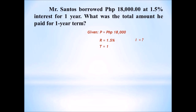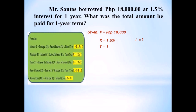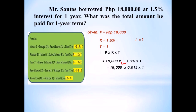We will first solve the interest in order to find the amount due. From the formula, interest is equal to principal times rate times time. Substitute: principal amount is 18,000 times 1.5 percent times 1. Change first the percent into decimal by moving two decimal places to the left. So that is 18,000 times 0.015 times 1. The interest is equal to 270.